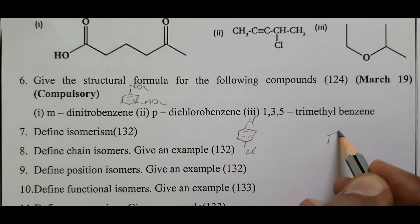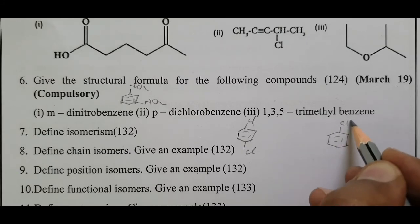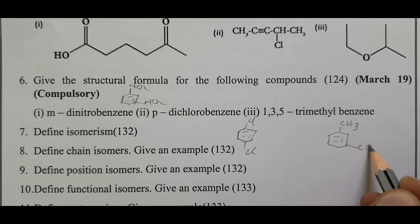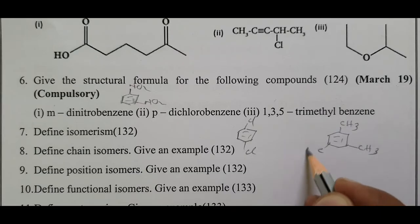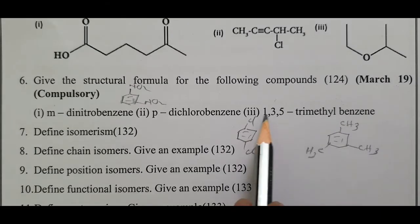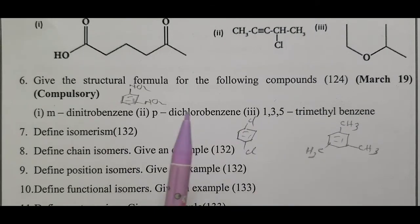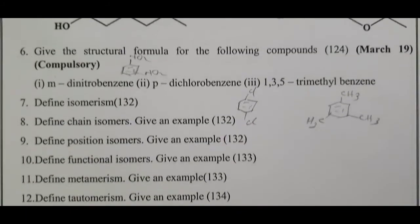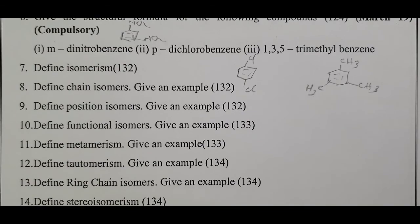1,3,5-Trimethyl benzene: benzene ring with three methyls at 1,3,5 positions. Molecular formula compulsory question number 7: Define isomers. Compounds having same molecular formula but different structural formula are called isomers, and the phenomenon is called isomerism.